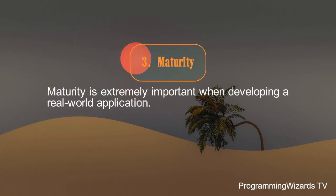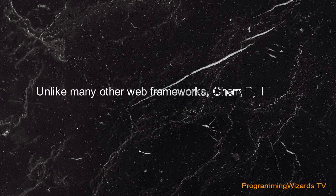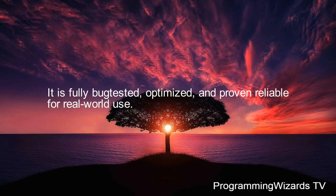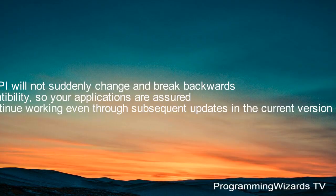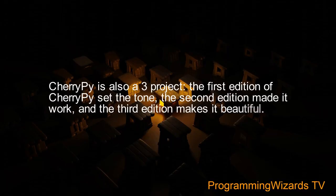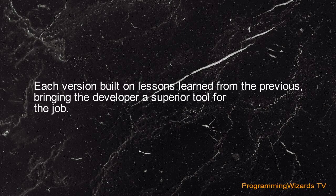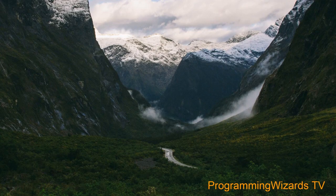Number 3: Maturity. Maturity is extremely important when developing a real-world application. Unlike many other web frameworks, CherryPy has had many final, stable releases. It is fully bug-tested, optimized, and proven reliable for real-world use. The API will not suddenly change and break backwards compatibility, so your applications are sure to continue working even through subsequent updates in the current version series. CherryPy is also a 3.0 project. The first edition set the tone, the second edition made it work, and the third edition makes it beautiful. Each version built on lessons learned from the previous, bringing the developer a superior tool for the job.